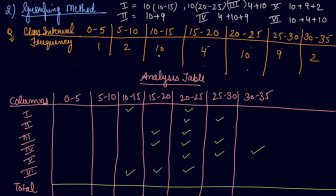We count the tally marks (number of times each class appears) across all columns: the totals are 2, 3, 1, 2, 6, 3, and 1 for each class respectively. The highest total is 6, corresponding to the class 20 to 25. We could not find the modal class by inspection alone because there were two equal highest frequencies of 10 and 10. By doing the grouping table and analysis table, we determined that 20 to 25 is the modal class.